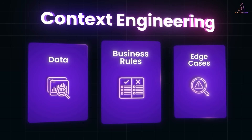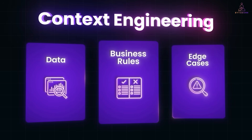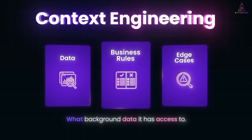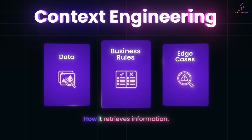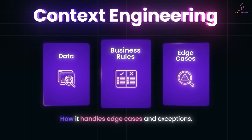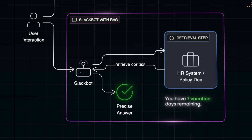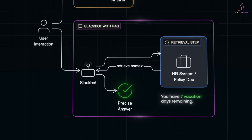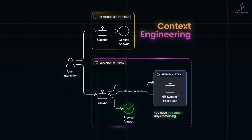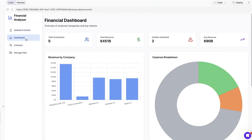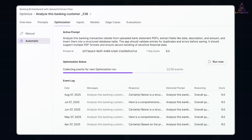This is where context engineering comes in. Instead of relying on clever wording, you design the environment around the AI — what background data it has access to, how it retrieves information, how it handles edge cases and exceptions, and how it stays accurate when scaled up. In this video, we'll dive into the importance of context engineering and see how Impromptu AI leverages it to let you build production-grade applications from scratch with automatic optimizations baked in.